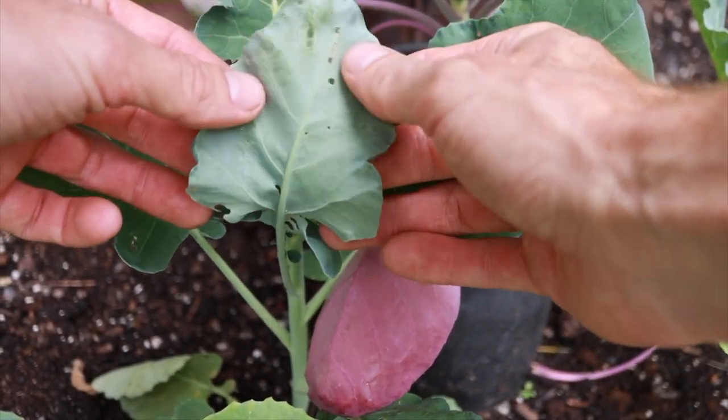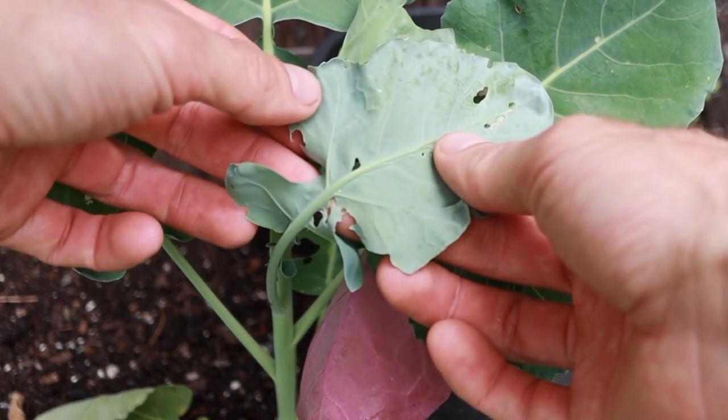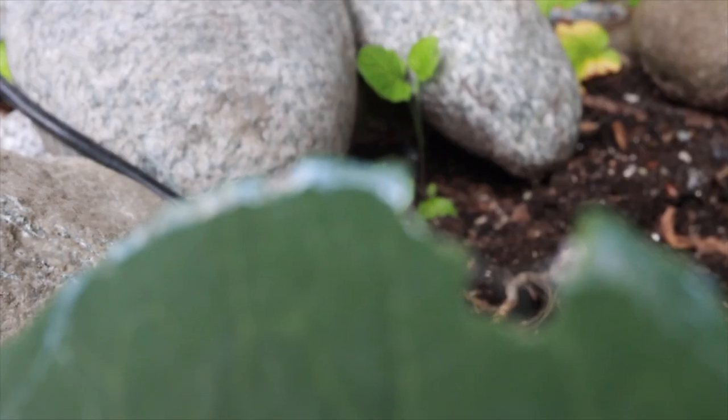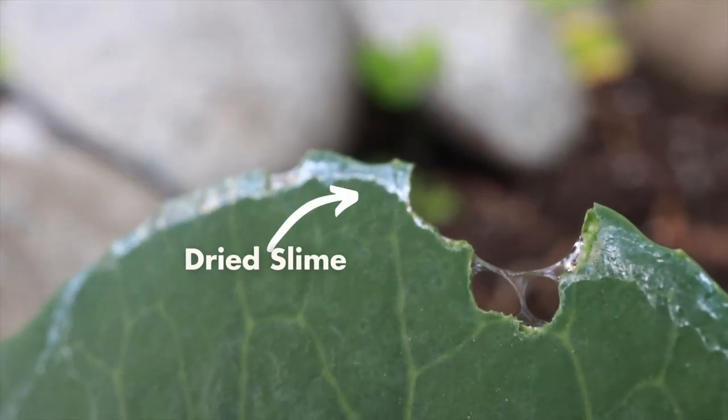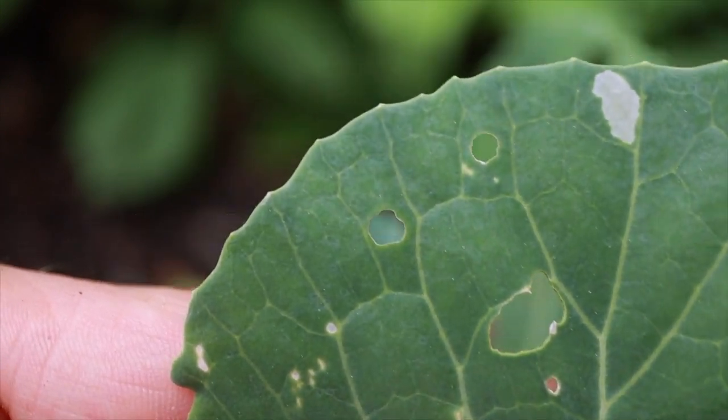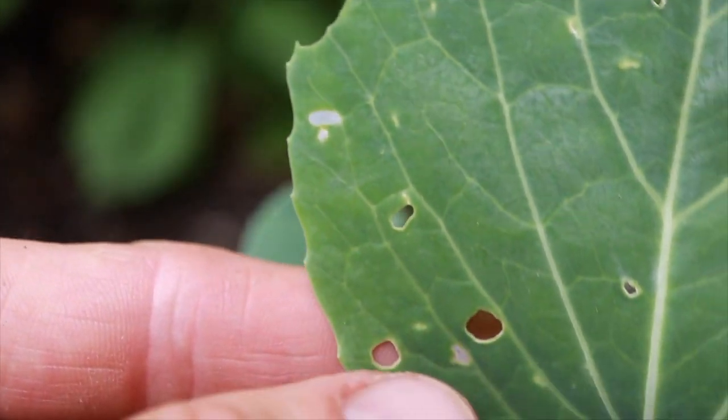With cabbage moths and worms, the first telltale sign we're looking for are small bite marks and holes in the leaves on our plants. This is primarily going to be on our brassicas such as broccoli, cabbage, cauliflower, or kale. As we notice those holes, we also want to check for any dried-up slime — if we see slime, we could actually be dealing with a slug instead of a cabbage worm. On the leaves I'm looking at right now, I'm not spotting any slime, which indicates it's probably a cabbage worm.